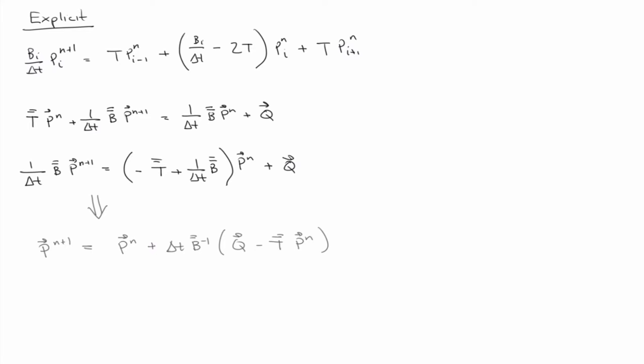All right, so you remember when we first introduced the explicit equation or we talked about the difference between the explicit and implicit? The biggest difference was that the implicit you have to invert a matrix. That's the biggest difference between the two.